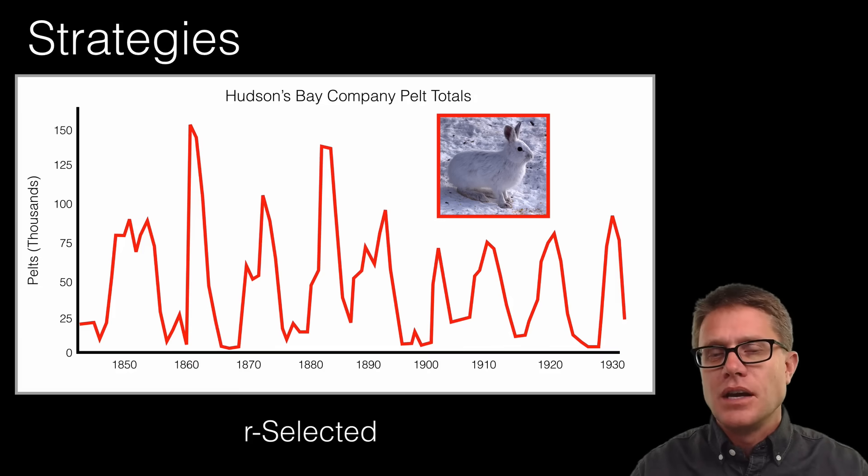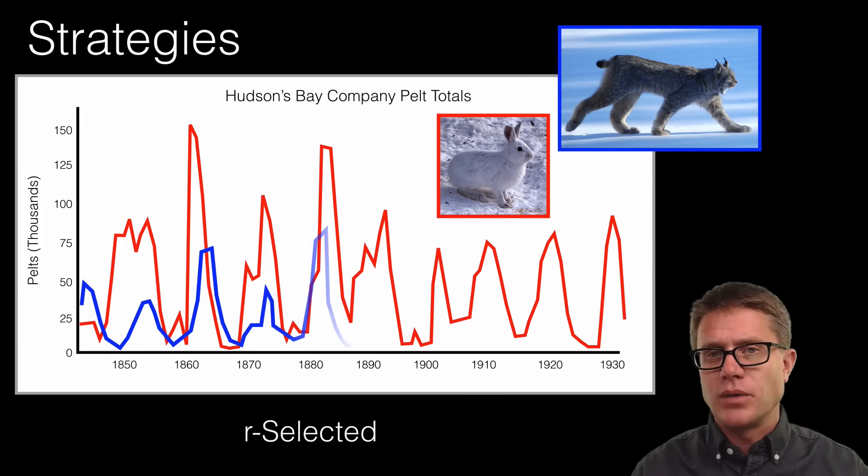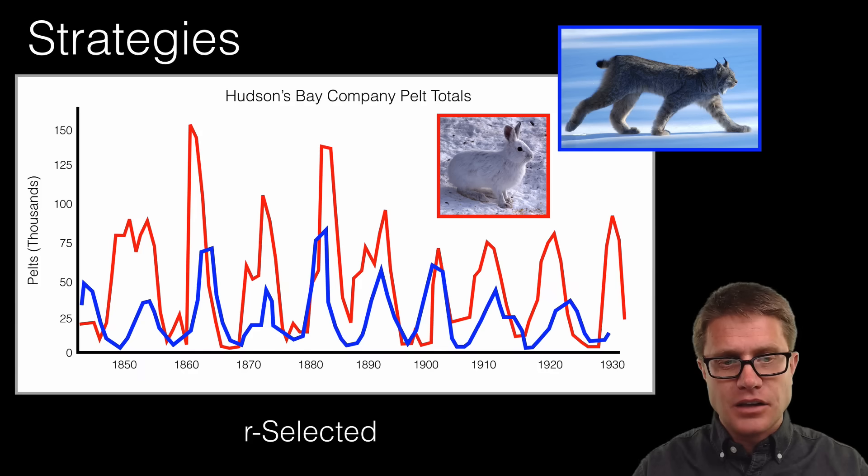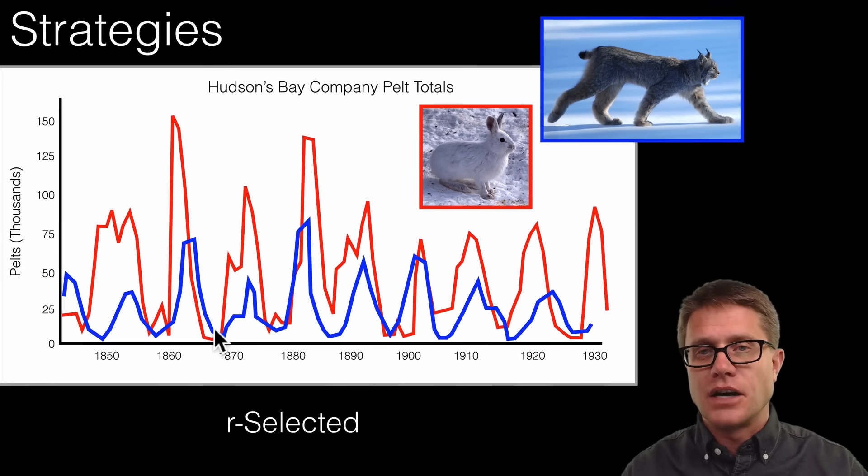Now what is interesting is that there is another species. And so the arctic hare are fed on by the Canada lynx. And if we look at their population, their population goes through a boom and bust as well. We have what is called a predator-prey relationship where as the arctic hare population increases then we can have more lynx feeding on it. But as they crash then the lynx are going to crash as well.